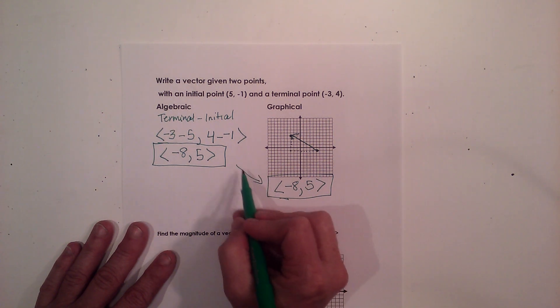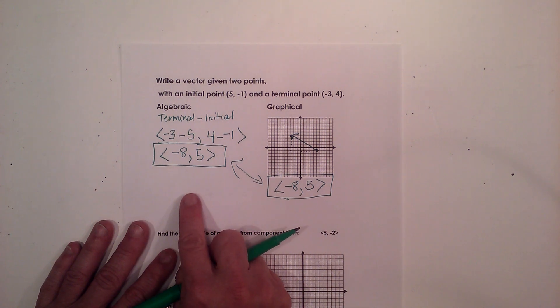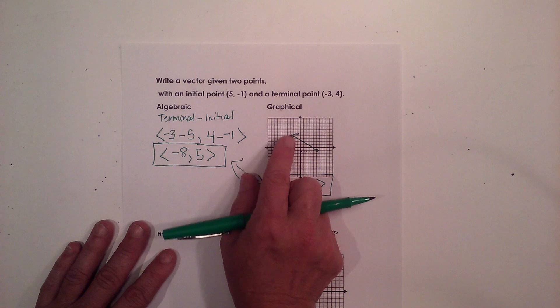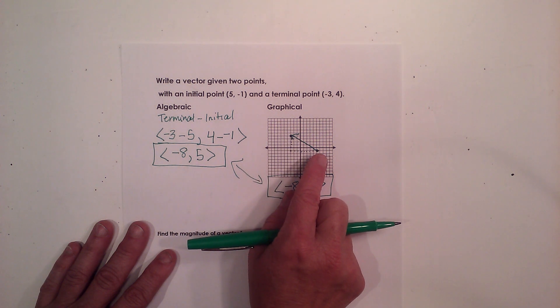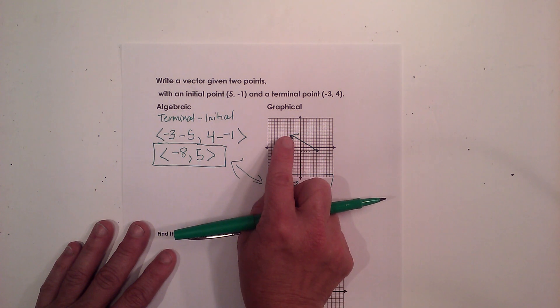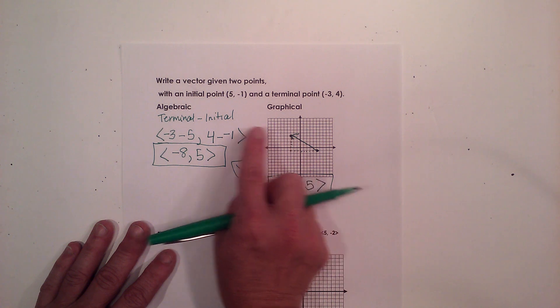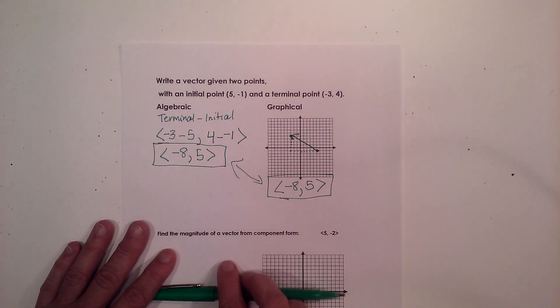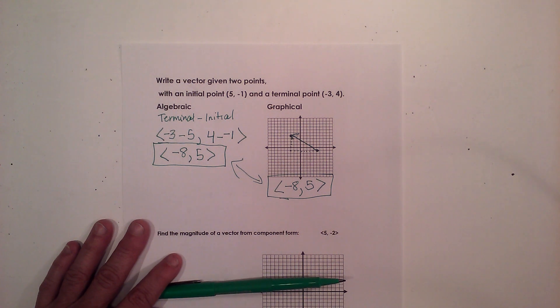And I get the same answer either way, but I can do it algebraically, or I can do it graphically. The key is make sure you're counting from your initial to your terminal. And if you're doing it algebraically, it's terminal minus initial to get your directions correct. I hope this video was helpful.